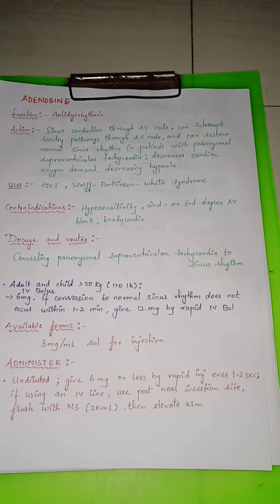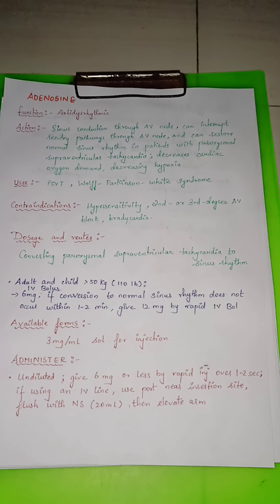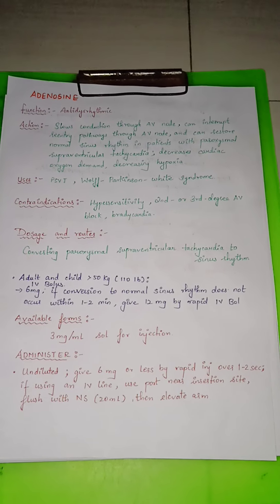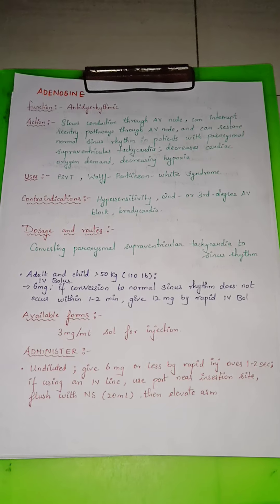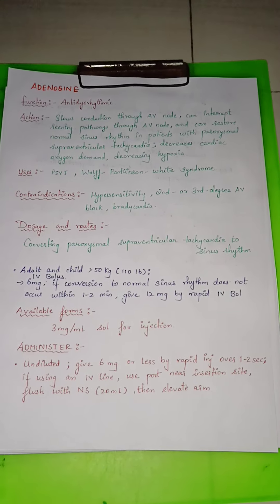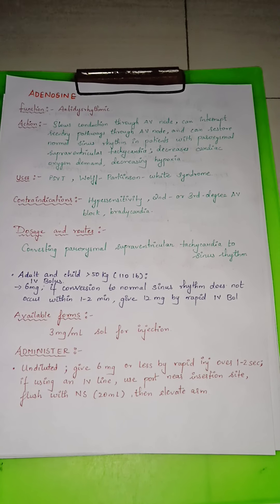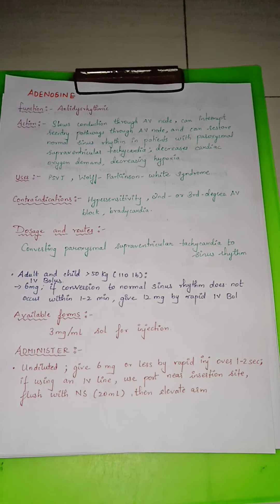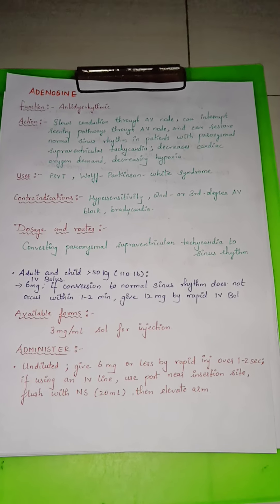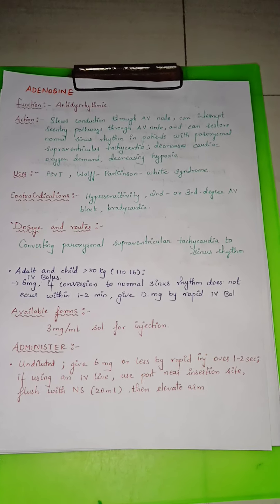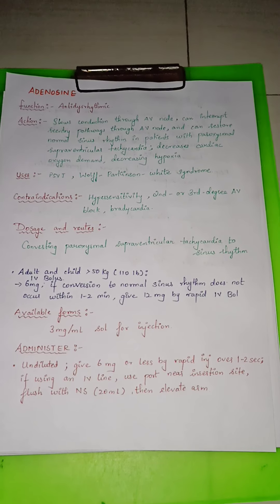For dosage: to convert paroxysmal SVT to sinus rhythm, in adults with weight less than 50 kg, give 6 mg IV bolus first. Adenosine is mostly given as an IV bolus. If conversion to normal sinus rhythm does not occur within one to two minutes, give a second rapid dose of 12 mg IV bolus. Adenosine comes in ampoule form — one ampoule contains 3 mg per mL solution for injection.